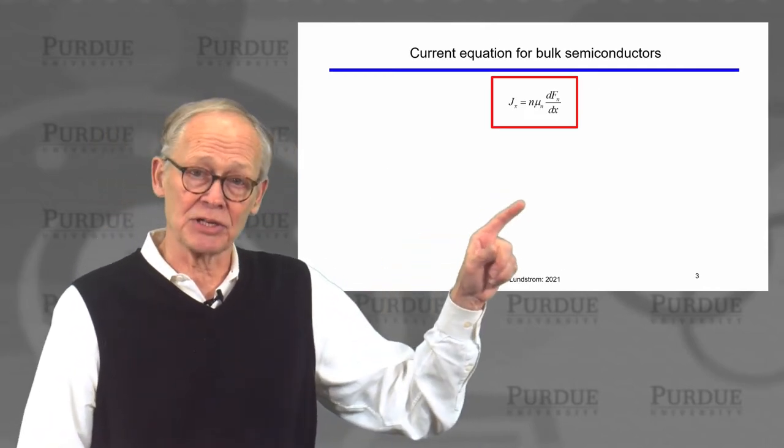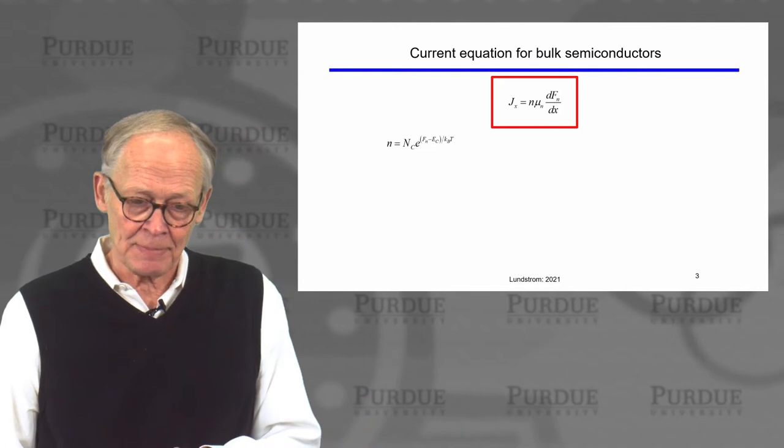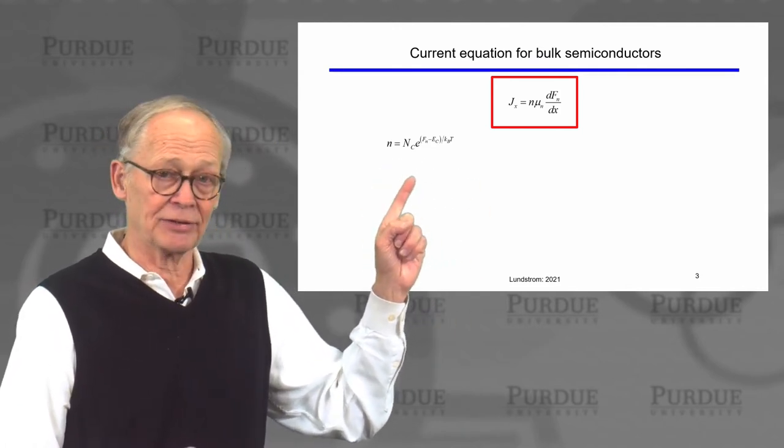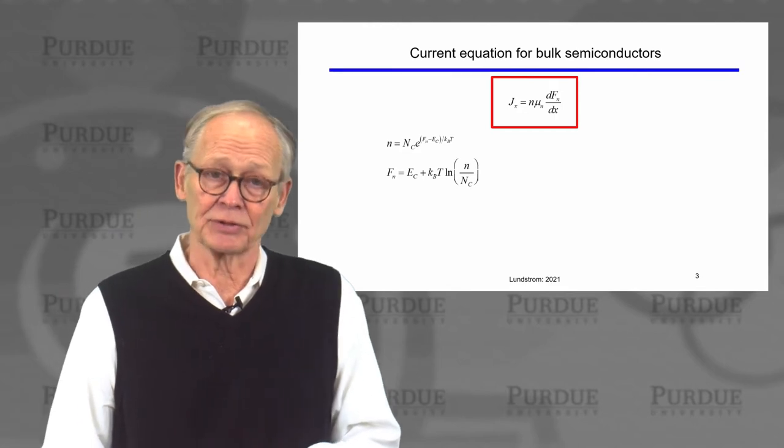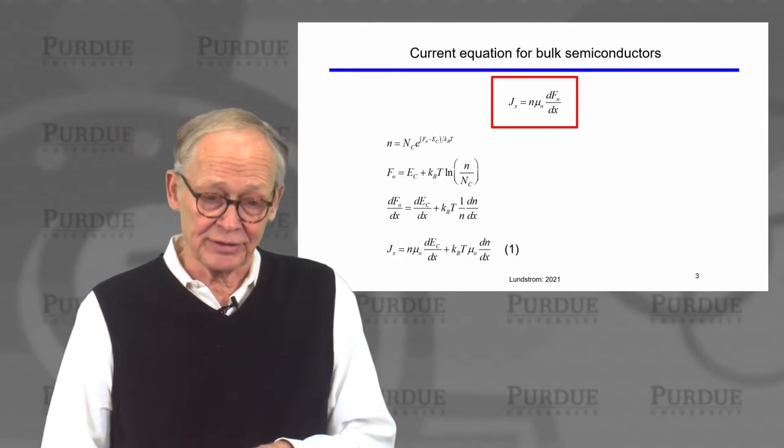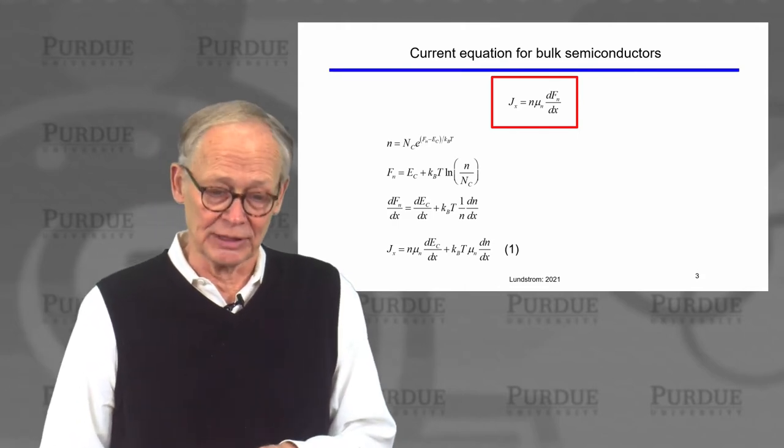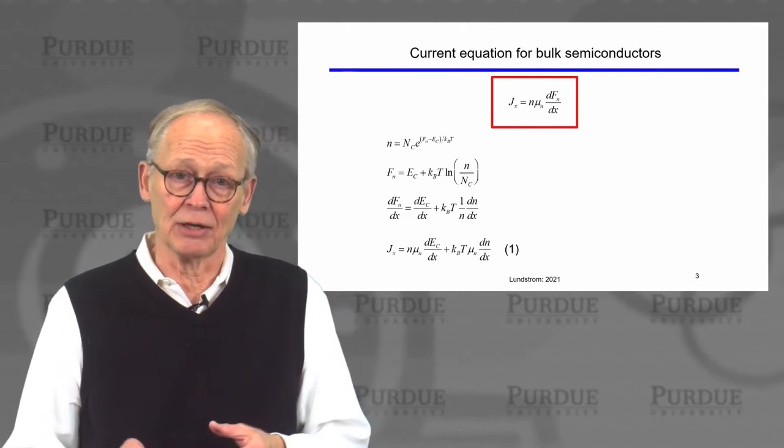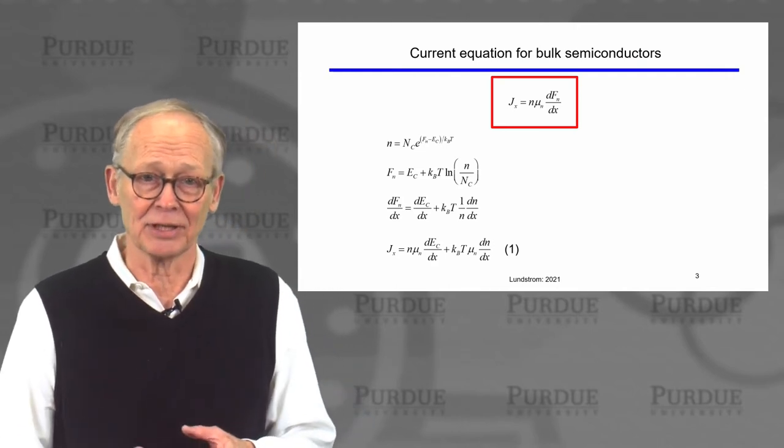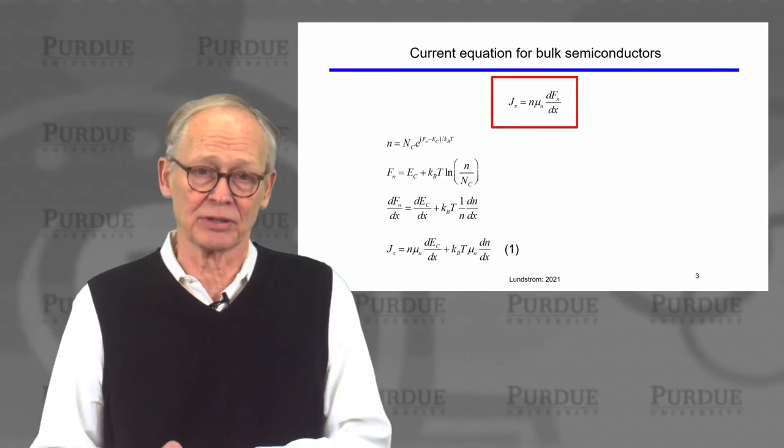So if we begin with that current equation for a bulk semiconductor, if we recognize that we can relate the quasi Fermi level to the carrier density, solve for the quasi Fermi level, take its gradient, insert that into the current equation, we end up with this equation. We have two components now, a drift component, a drift in the gradient of the conduction band minima, and the diffusion component.